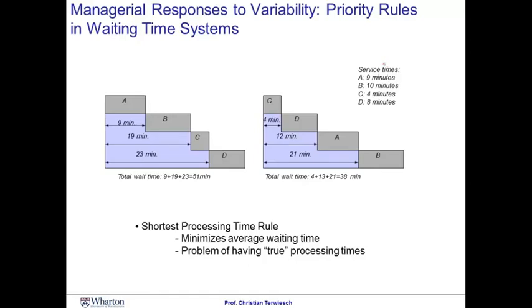Now, you see the processing time, so A, B, C, and D over here. It takes me nine minutes to do A, ten minutes to do B, four minutes to do C, and eight minutes to do D. Now, if I order them A, B, C, D, you see that B will have to wait nine minutes, C will have to wait nine plus ten equals nineteen minutes, and D will have to wait for A, for B, for C, equals to twenty-three minutes. So, across all tasks, the total wait time is fifty-one minutes.